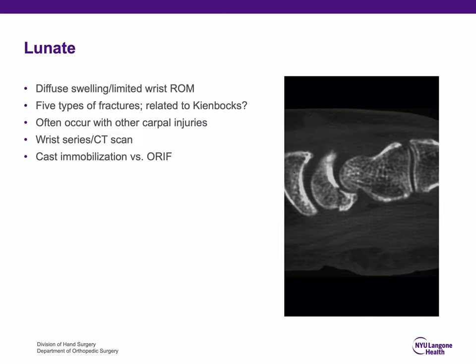The lunate fracture often occurs with other carpal bone and ligament injuries. It would be very hard to evaluate a lunate fracture on a plain x-ray, and a CT scan would be indicated. This lunate fracture was not diagnosable on plain radiographs — it's visible in the distal volar aspect of the lunate on the lateral view. I treated this with cast immobilization since there was not enough articular incongruity to warrant surgical fixation, and I documented healing with a repeat CT scan eight weeks later.